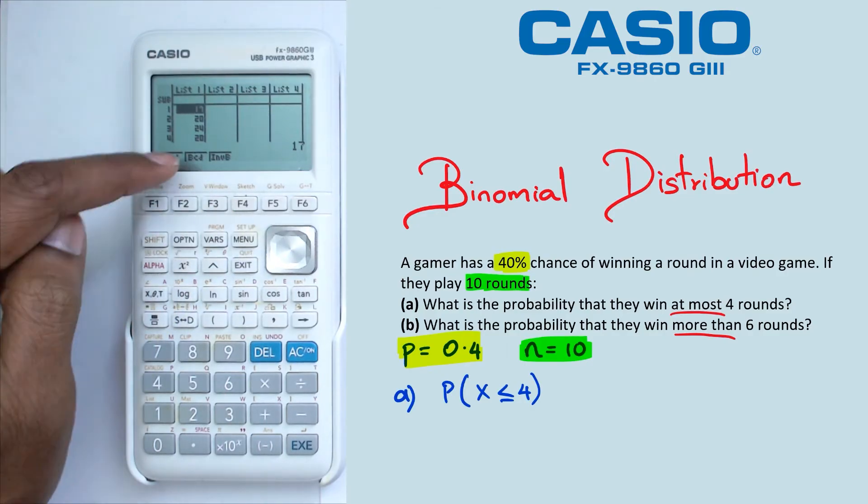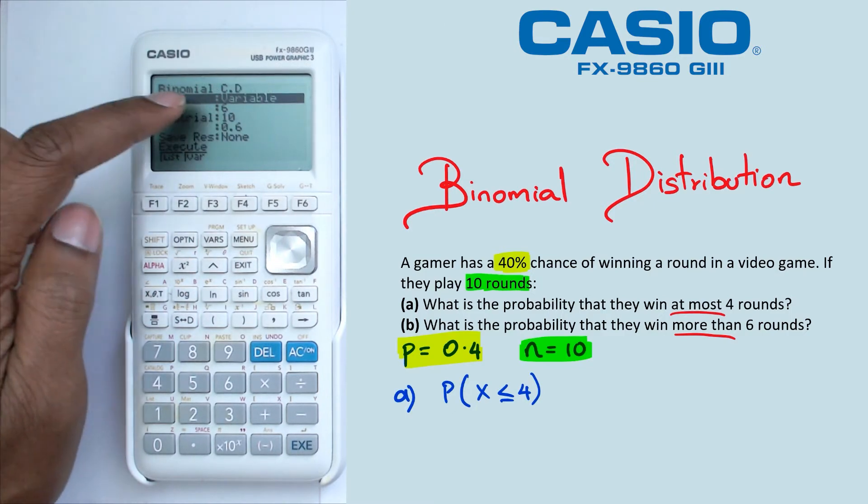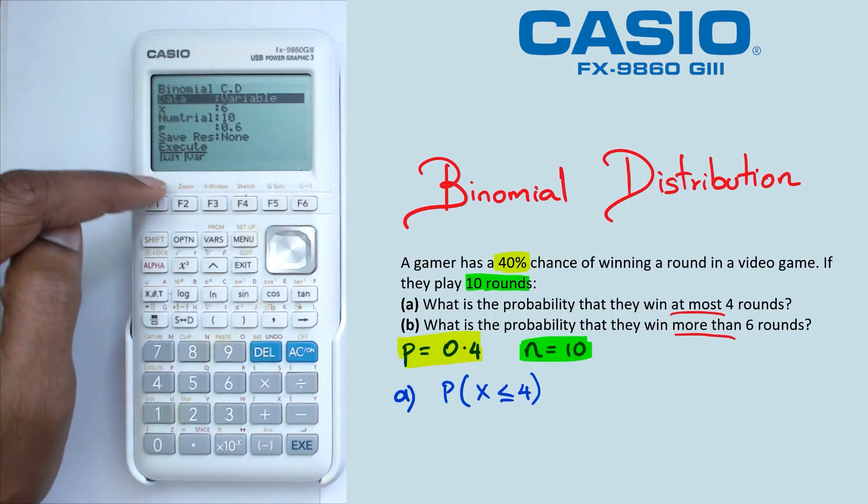Now, in this case, we're going to be looking at BCD. Now if you're looking for binomial distribution and exact values, you would use BPD. But with this one, we're going to use BCD. And make sure you choose variable because we don't want to be working with lists.